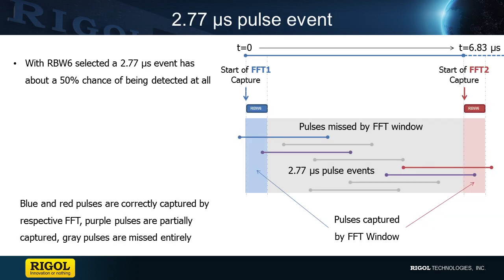Here's a 2.77 microsecond example. With these short pulses below the 100% POI value, we see that sometimes the pulses are missed entirely between the two FFTs. We've zoomed in in the time domain here, and we see the FFT capture first in blue, and then the second capture in red. Some of those pulses are captured accurately, but some of them are missed entirely. A 2.77 microsecond event has about a 50% chance of being accurately captured.